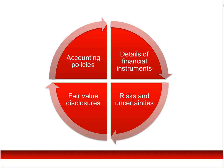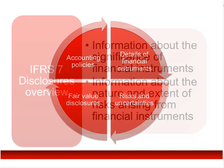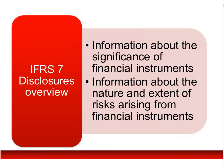We'll look at examples of all of these as we go through, covering each of the four segments. IFRS 7 deals with two key areas: information about the significance of financial instruments, and information about the nature and extent of the risks arising from financial instruments.